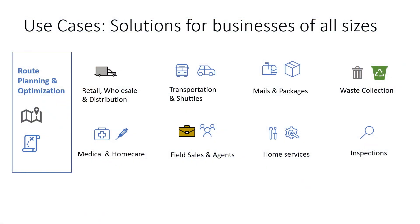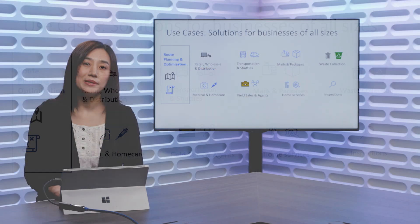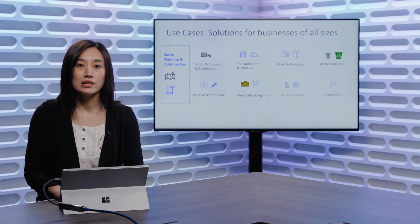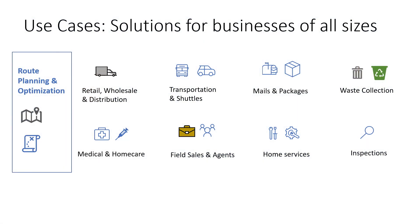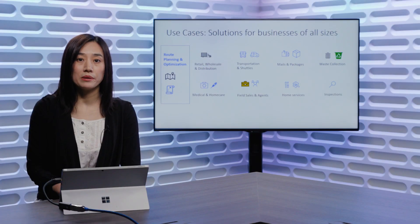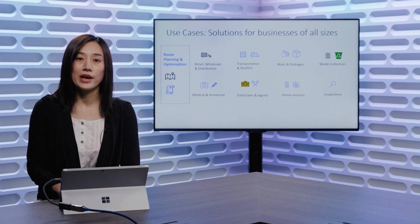What are the use cases of Multi-Itinerary Optimization API? There are a lot of businesses, small, medium, or large that focus on service dispatch, field sales management, or customer pickup and deliveries. For example, trucks sending goods to and from distribution centers and retail stores, shuttle vehicles that pick up and drop off passengers at different places, and postal services delivering mails and packages with collection from commercial or residential locations.